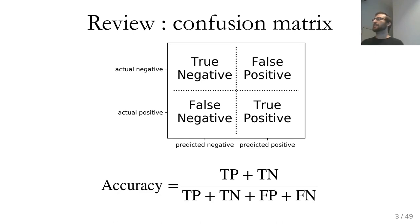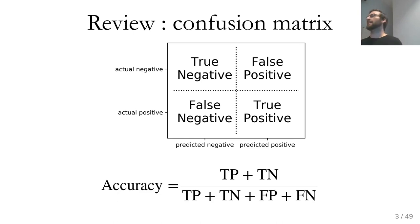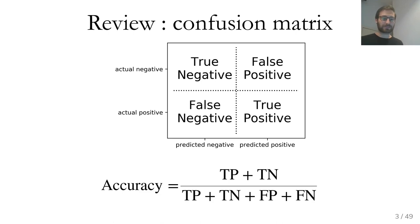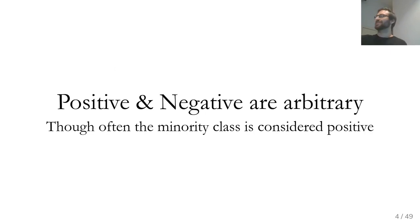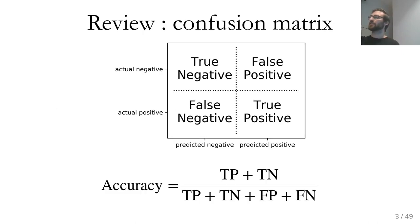The metric we already saw is accuracy: true positives plus true negatives divided by everything. It's the sum of the diagonal divided by everything, and this is what you get when you call score on a classifier in scikit-learn. Even though this is the default metric, it has a bunch of issues. Note that accuracy is actually symmetric in the positive and negative class — if you flip all positives to negatives and negatives to positives, the number stays the same. That's not true for all metrics.